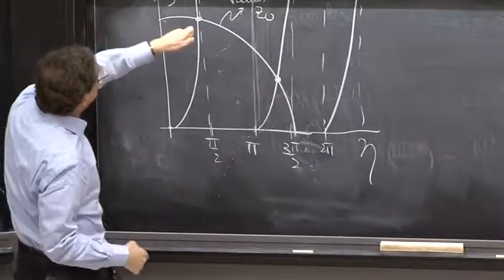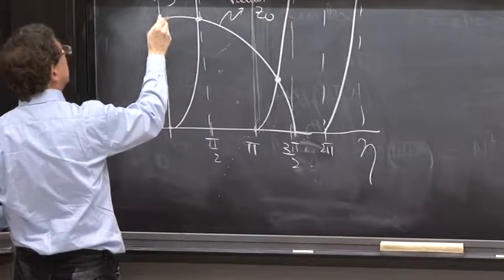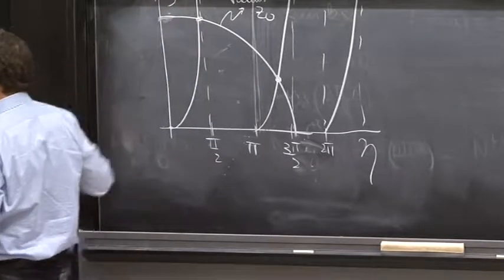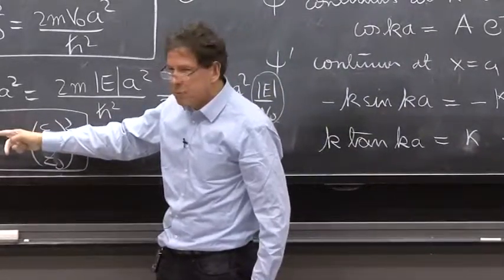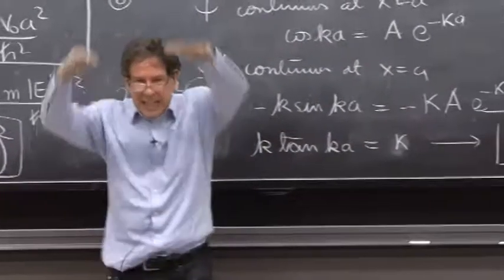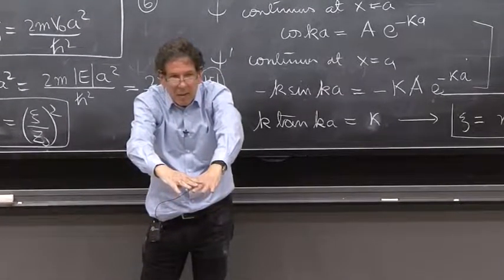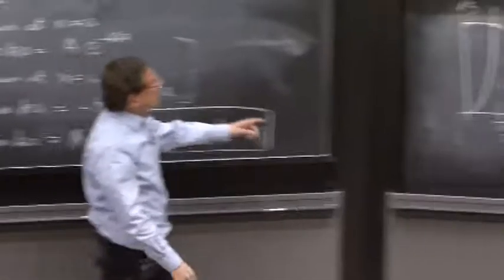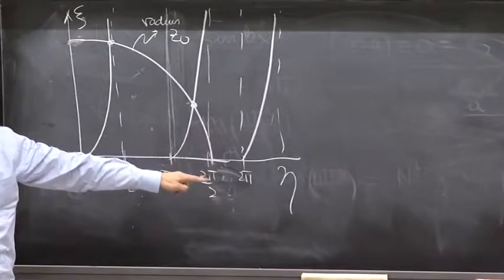These points represent values of ψ and values of η, from which you can read the energy. In fact, you can look at this state and say, that's the state of largest ψ, and therefore, it's the state of largest absolute value of the energy. It's the most deeply bound state. Then this is the next deeply bound state. There's two bound states in this case.